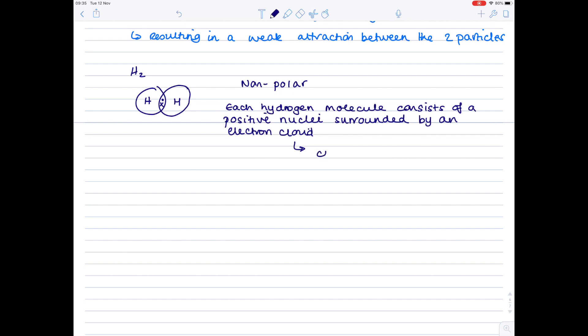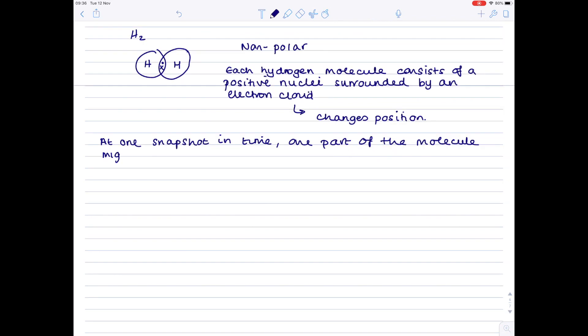This electron cloud is able to change position. So that means that at any one snapshot in time, one part of the hydrogen molecule might have a slightly higher electron density, and the other part might have a slightly lower electron density. And this is what induces the temporary dipole.